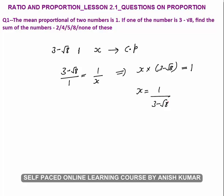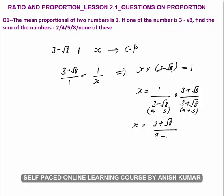So the value of x would be 1 upon (3 minus root 8). Now how to solve this — you have to rationalize this number. Rationalize means making the denominator a rational number. So I will multiply and divide by (3 plus root 8). Using the identity (a minus b)(a plus b) equals a squared minus b squared, the denominator becomes 3 squared minus root 8 squared, which is 9 minus 8 equals 1.